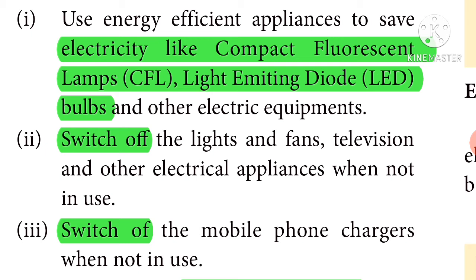Use energy-efficient appliances like compact fluorescent lamps (CFL) and light emitting diode (LED) bulbs, and other electrical equipments that use kurainth minn aatrala membadutthum. CFL — Compact Fluorescent Lamps — and LED bulbs are examples of such energy-saving devices.